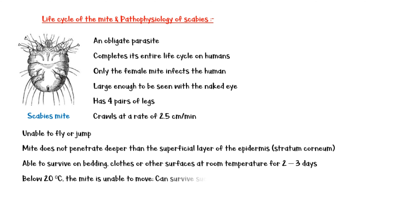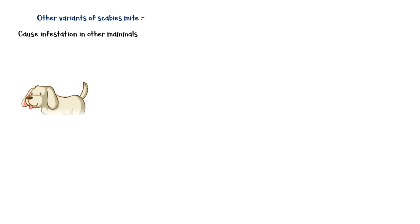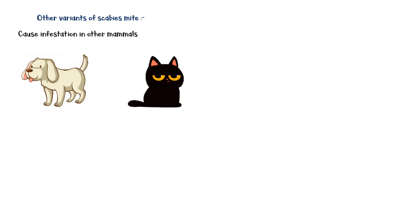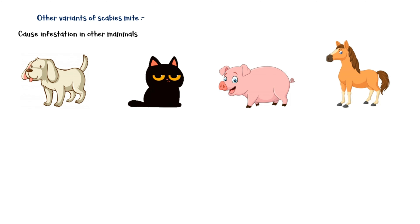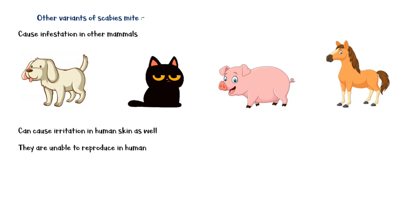At temperatures below 20 degrees Celsius, the mite is unable to move; however, it can survive such temperatures for extended periods. Other variants of the scabies mite can cause infestation in other mammals, such as dogs, cats, pigs, and horses. These variants can cause irritation in human skin as well; however, they are unable to reproduce in humans, so they cause only a transient dermatitis.